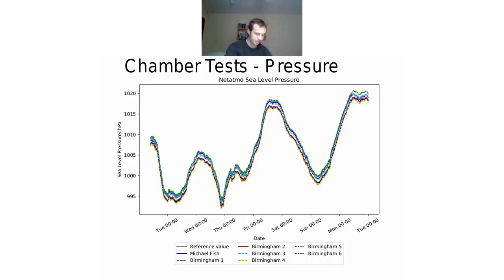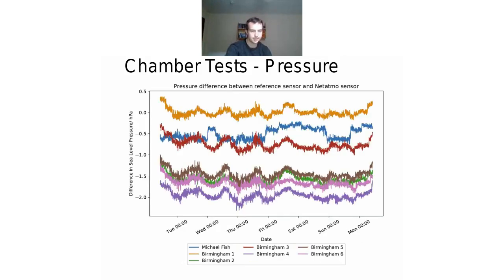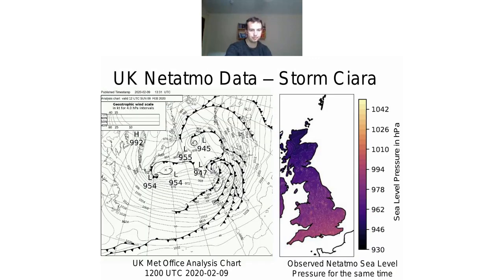Looking at pressure: on the whole the stations do a good job, reflecting changes quite well in comparison to the reference station. Running this over a week and looking at the differences, there are a few anomalies here and there, but on the whole they're within one hectopascal. It was also reassuring to see that when Storm Ciara came over earlier this year, the UK Netatmo observations did reflect the strong pressure gradient we saw from that storm.